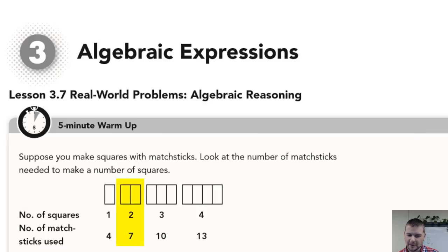In order to make two squares, notice these are adjacent and actually share a side, we would have the original four squares plus one, two, three more, and that would make a total of seven matchsticks required.